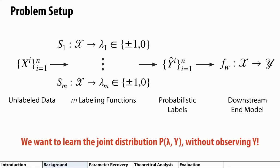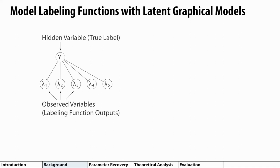To do this, we need to learn the joint distribution between labeling function votes and the true labels y, without actually observing y. We can get some traction on this problem by modeling it with a latent graphical model like the one shown here.